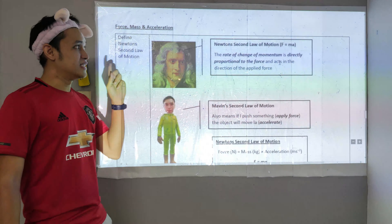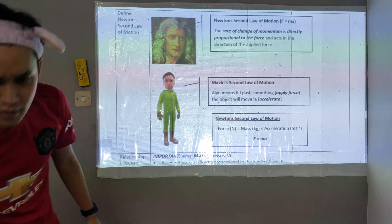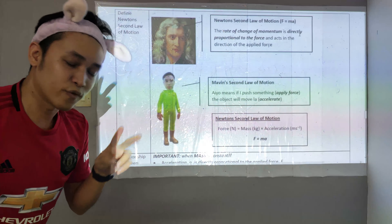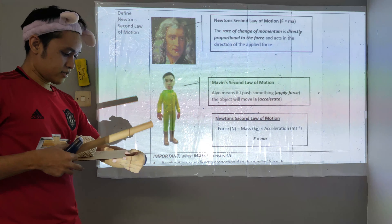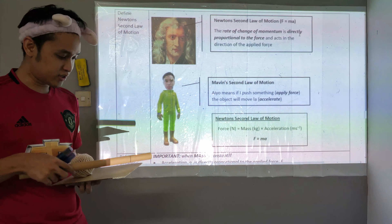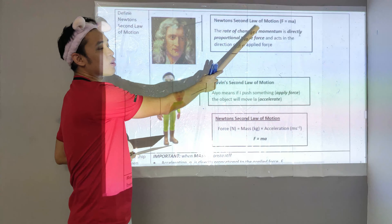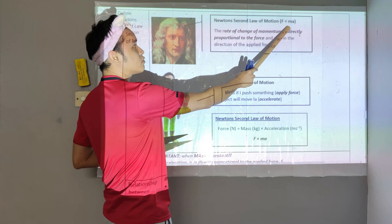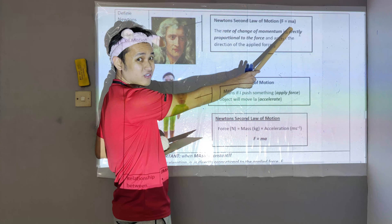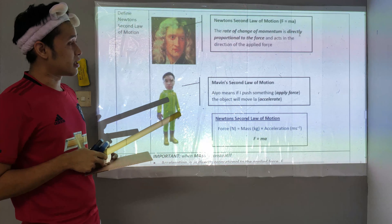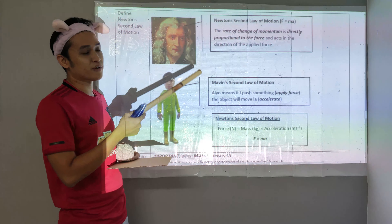So here comes the second law of motion by Newton. For the second law of motion, the formula is F equals ma. What Newton says is: the rate of change of momentum is proportional to the force applied.